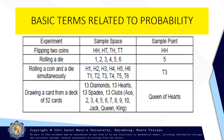We have more examples on experiment, sample space, and sample point. We have flipping two coins, rolling a die, rolling a coin and a die simultaneously. So if you roll a coin and a die, the sample space includes: head and one, head and two, head and three, head and four, head and five, head and six, tail one, up to tail six. The given sample point in this experiment is T3, or tail three.